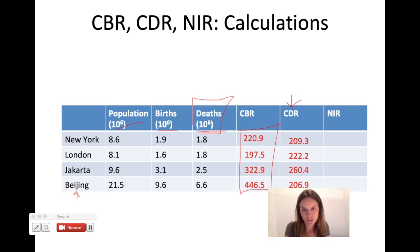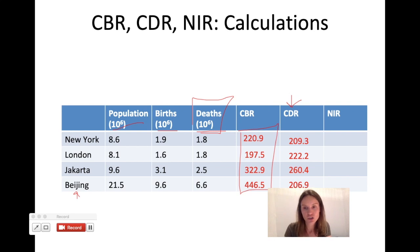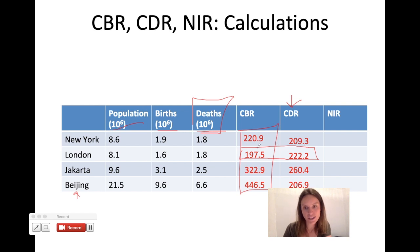Now that we have crude birth rate and crude death rate, we can look at what's happening to the overall population. If the death rate is higher than the birth rate, the population is shrinking. There's one city where that is happening in this data set — if you guessed London, you are correct. The death rate is higher than the birth rate, so the natural increase rate will be negative. The rest of the cities should have a positive natural increase rate.